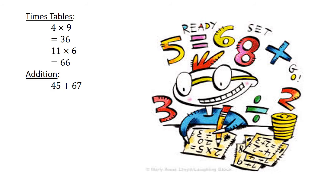Addition: 45 plus 67 equals 112. Subtraction: 27 minus 31 equals negative 4.